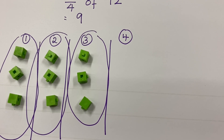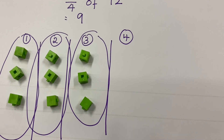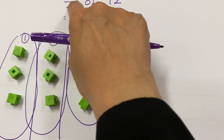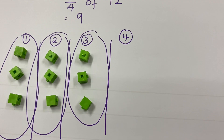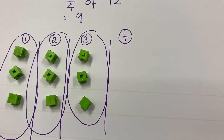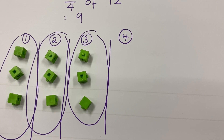So you have two methods: number one, using the fraction discs; and the second method is using columns. To ensure you get the right number of columns, check the denominator. If it's four, draw four columns to represent four groupings; if it's six, draw six columns.